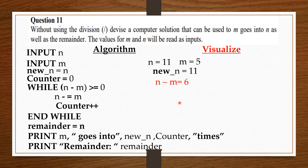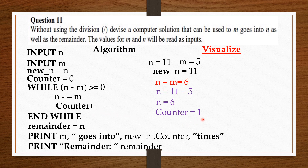Now, inside the while loop, we say n minus equals m — that is, subtract m from n — which is n equals 11 minus 5, which gives us 6. Next, counter plus plus. That is, whatever value is in counter, increase it by 1. Since counter is 0, 0 plus 1 is 1. That is, counter is now equal to 1. End while. At the end of running this loop for the first time, n equals 6 and counter is 1.